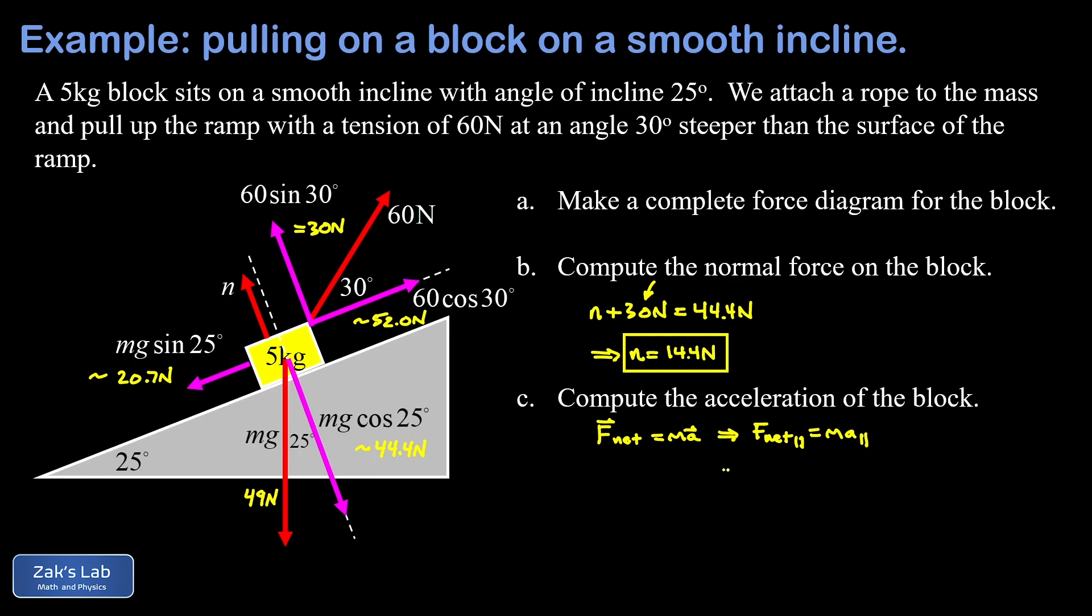So in that parallel direction our net force is going to be 52.0 newtons in the positive direction, and then minus 20.7 newtons that's in the negative direction. And this is going to be equal to the mass of our block, 5 kilograms, times the magnitude of our parallel acceleration. In other words, the acceleration along the surface of the ramp. So we just do the subtraction, divide by 5 kilograms, and we get a parallel. When I run the numbers on this to three significant digits, I get 6.26 meters per second squared, and we're done.